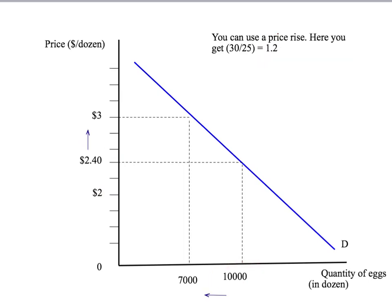We can look at a small price increase from $2.40 to $3 — an increase of 60 cents or 25%. That results in a reduction in quantity demanded from 10,000 to 7,000, a reduction of 3,000 which is 30%. That leads to an estimate of the own price elasticity: percentage change in quantity 30% divided by percentage change in price 25%, giving an estimate of negative 1.2.